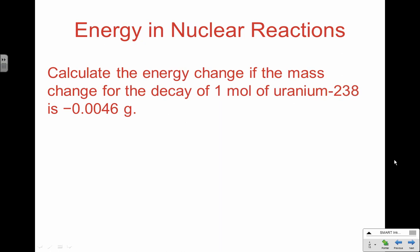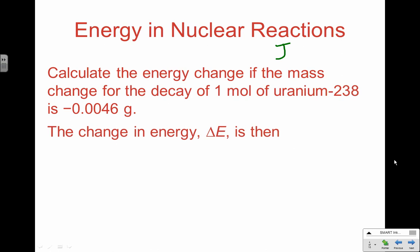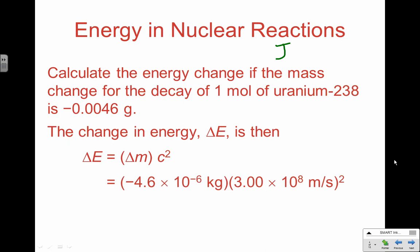Here's an example: the radioactive decay of uranium-238. One mole of it decayed, and we lost 0.004 grams of mass. To calculate energy in joules, we need kilograms and meters and seconds, so the first thing to notice is we're in grams — we have to convert to kilograms. The change in energy equals the change in mass times the speed of light squared. After converting to kilograms, we calculate the energy as 4.1 × 10¹¹ joules — negative, meaning exothermic. It's releasing a huge amount of energy, significantly higher than normal energies of ordinary chemical and physical reactions.